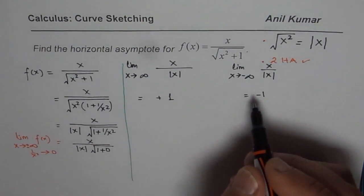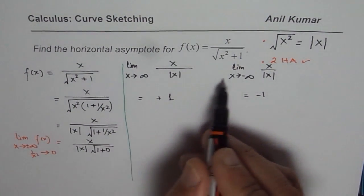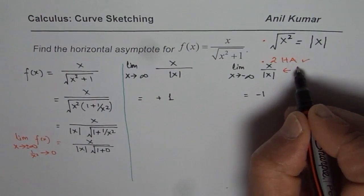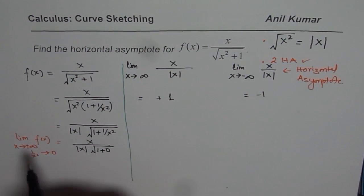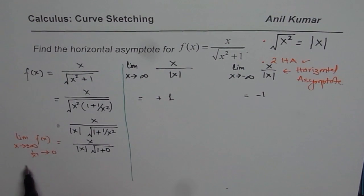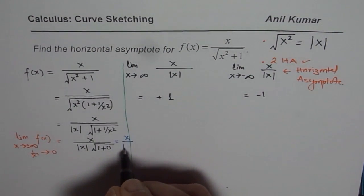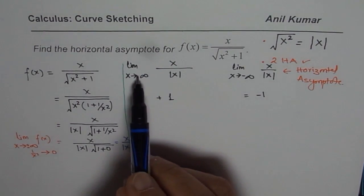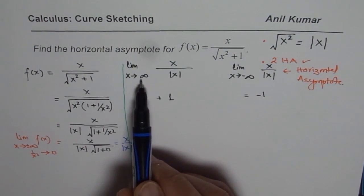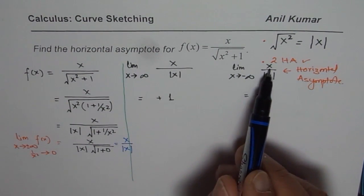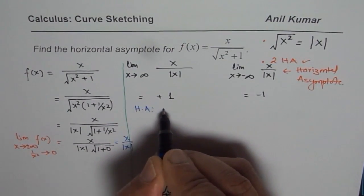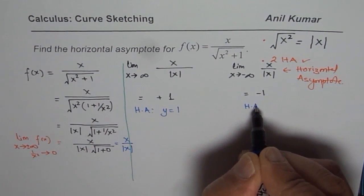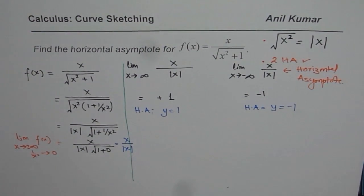Since the horizontal asymptote is determined by what happens to the function when x approaches positive or negative infinity, the limit of the function x over |x| gives us two results. When it approaches positive infinity, the result is positive 1. When it approaches negative infinity, the result is negative 1. Therefore, we have two horizontal asymptotes: y = 1 and y = -1.